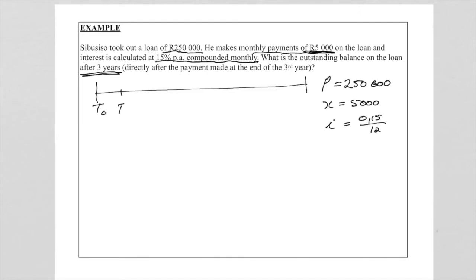So if I put this on a timeline for us to see what is happening here. This is T₀, T₁, T₂, let's say that is T₃, and let's say somewhere around here is T₃₆. So they want us to find the outstanding balance at this point at T₃₆. So how many payments was made here?